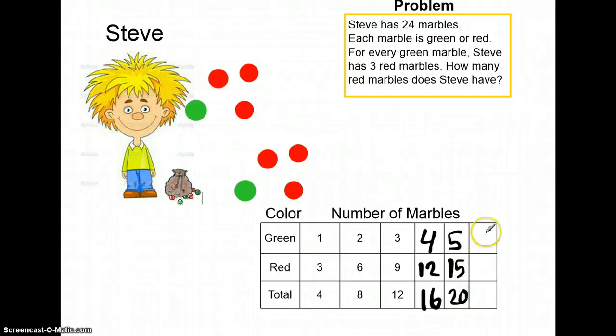Now let's keep trying. Let's see what happens when we have six green marbles. If we have six green marbles, then we are going to have eighteen red marbles. And that gives us a total of twenty-four marbles.